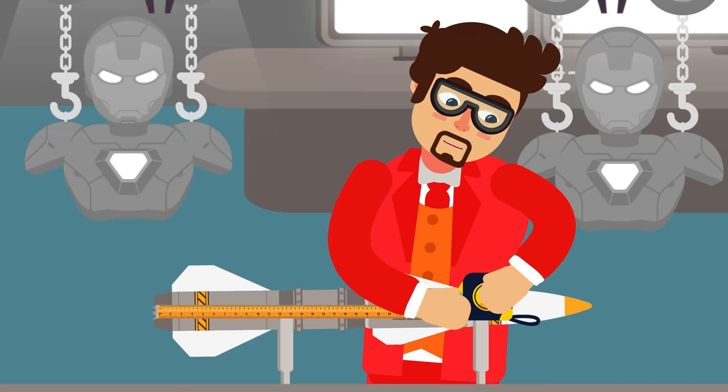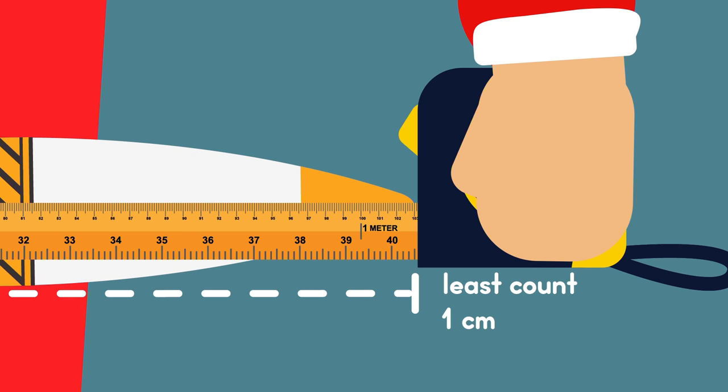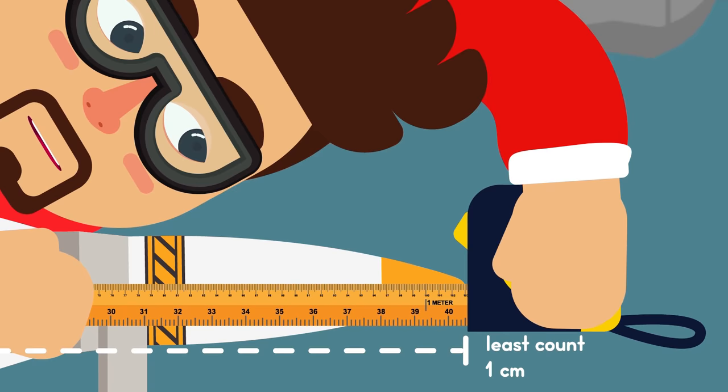Measuring tape: It is used by carpenters and builders to measure a greater length, usually in metre, centimetre and inches. This means one centimetre is the least count of measuring tape. The same as in metre rule, to measure accurately using a measuring tape, we must keep our eyes directly above the reading point.